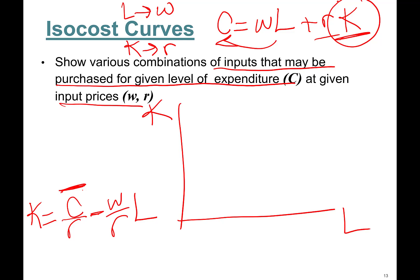Okay, so this C is a total, some cost level. You can put a bar on top to signify that it is constant. We can call this C0 for a certain cost level, C1 for a higher cost level. But this is the equation. So this looks like—how do we find what this line looks like? The isocost curve is going to be a straight line.